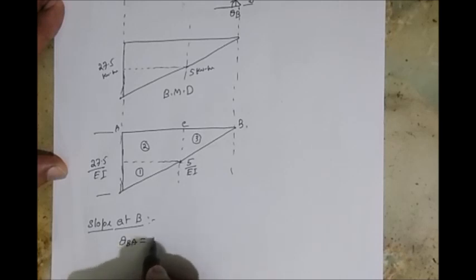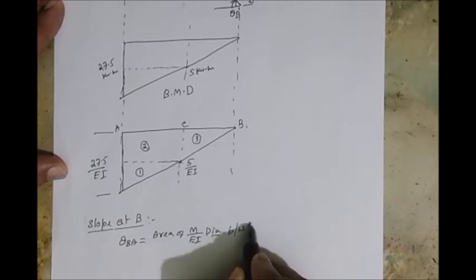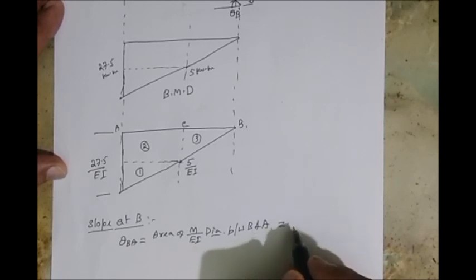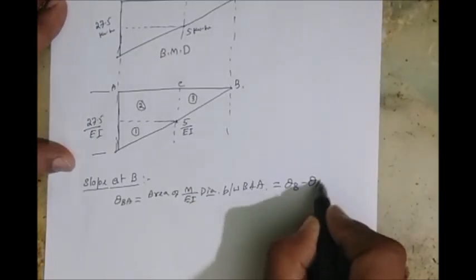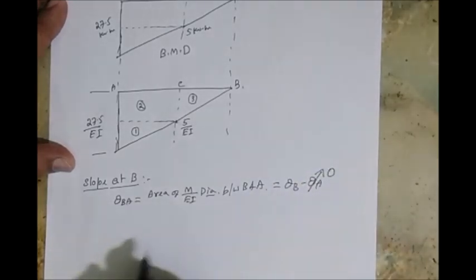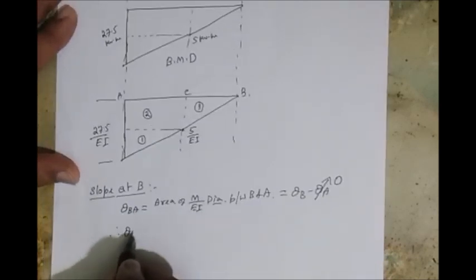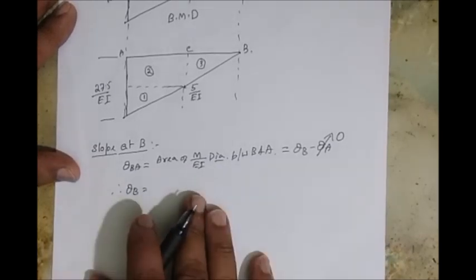Which is equal to area of M by EI diagram between B and A. Now we can split this one into two parts: theta B minus theta A. Theta A is zero because A is fixed, right? So the answer is directly theta B.